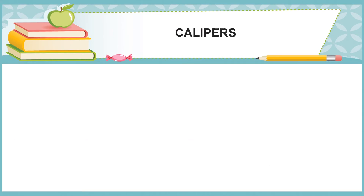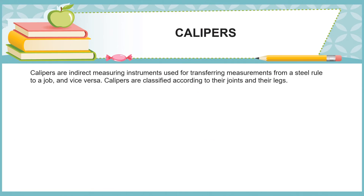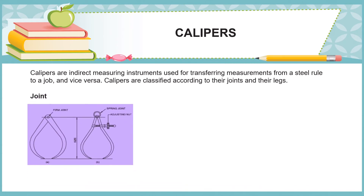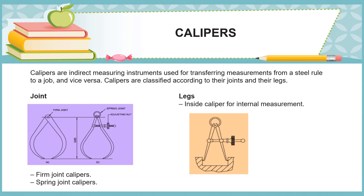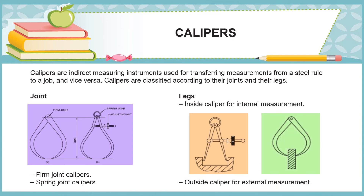Calipers are indirect measuring instruments used for transferring measurements from a steel rule to a job and vice versa. Calipers are classified according to their joints and their legs. There are two types of joints: firm joint calipers and spring joint calipers. Regarding legs, inside calipers are used for internal measurements and outside calipers for external measurements.